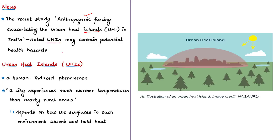Urban heat island is mainly a human-induced phenomenon. It occurs when a city experiences much warmer temperatures than nearby rural areas. The difference in temperature between urban and less developed rural areas has connection with how well surfaces in each environment can absorb and hold heat energy. In rural areas, most of the surface is covered with plants or farmlands with crops, making rural areas much cooler than urban areas because of transpiration.